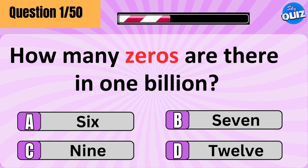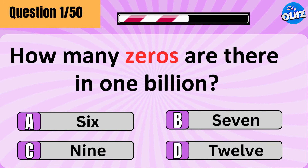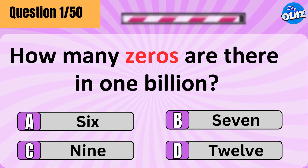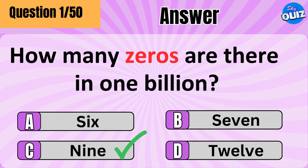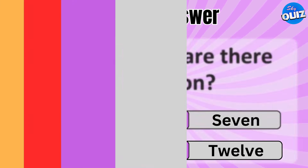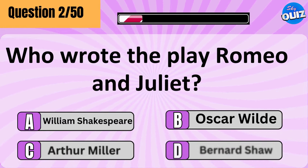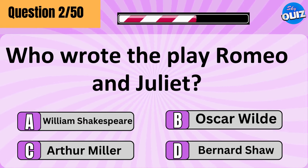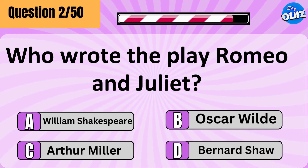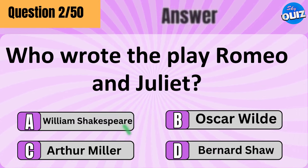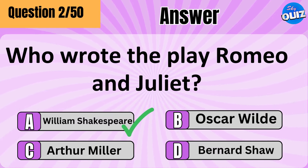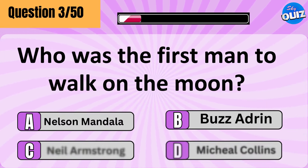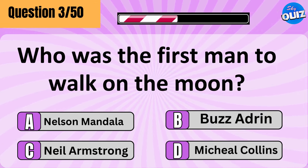How many zeros are there in one billion? Nine — off to a good start! Who wrote the play Romeo and Juliet? William Shakespeare. Who was the first man to walk on the moon?